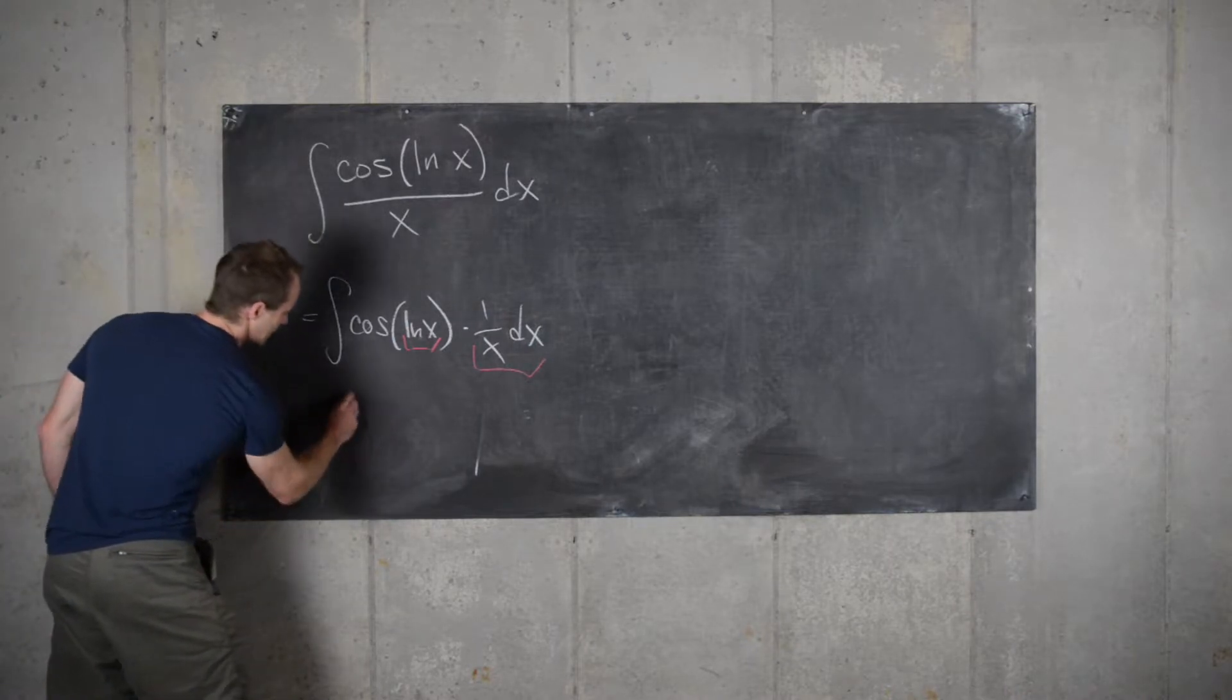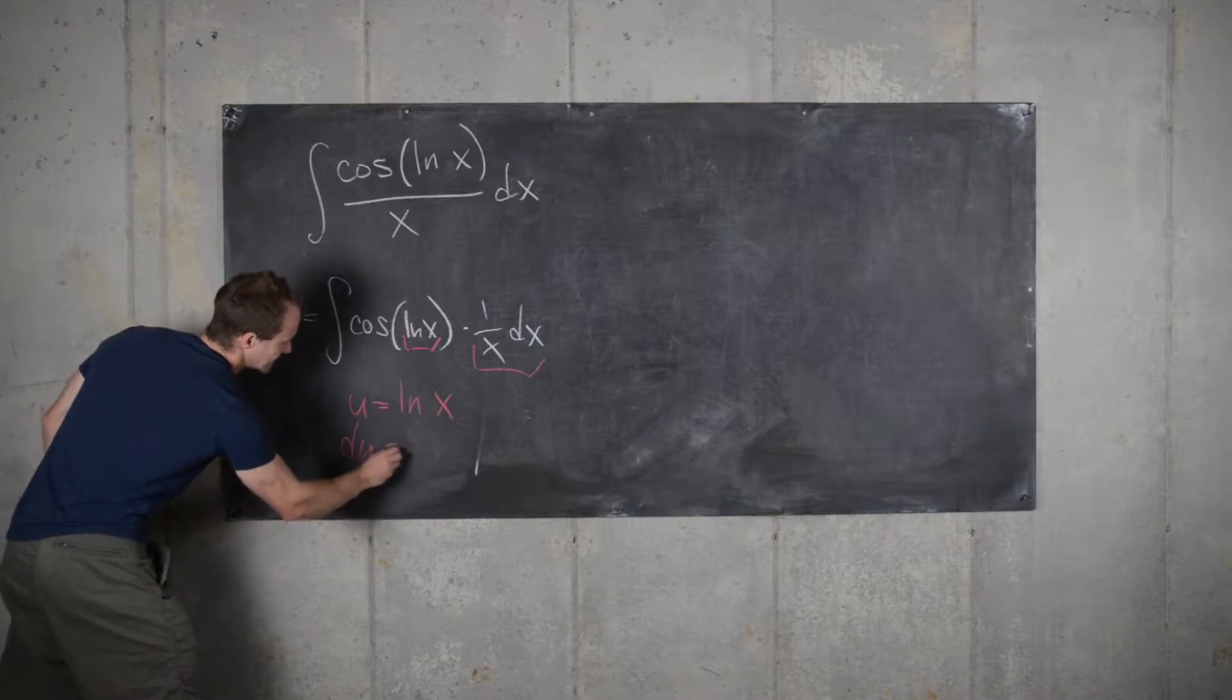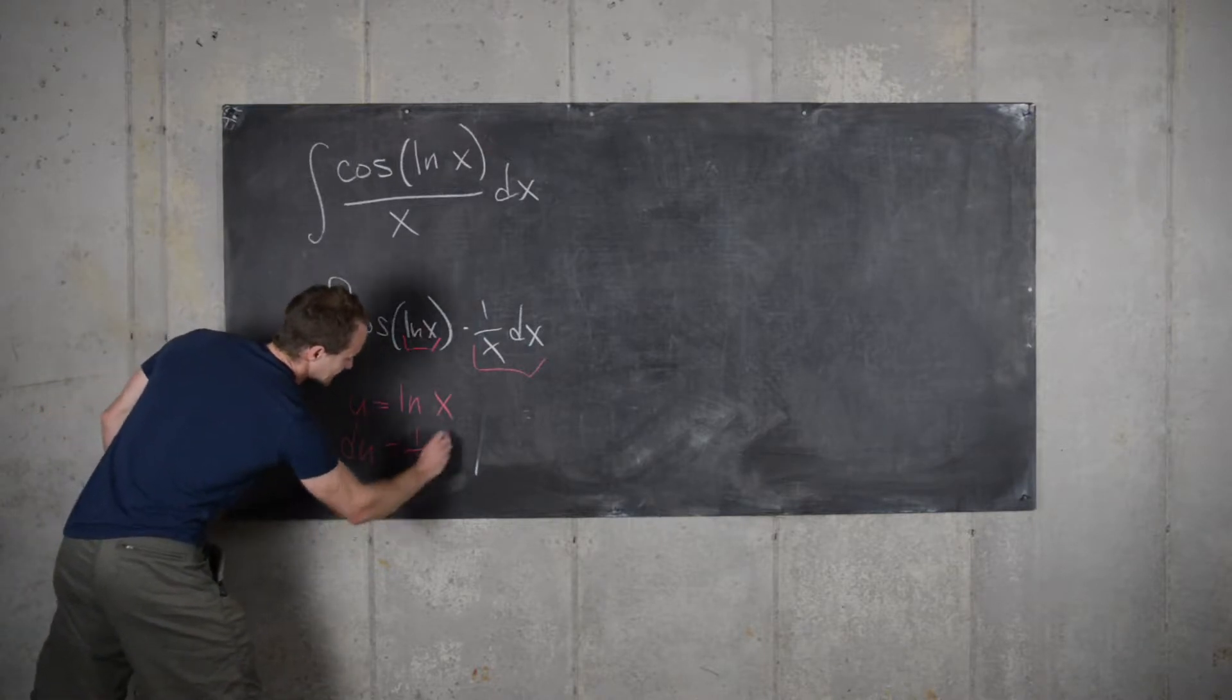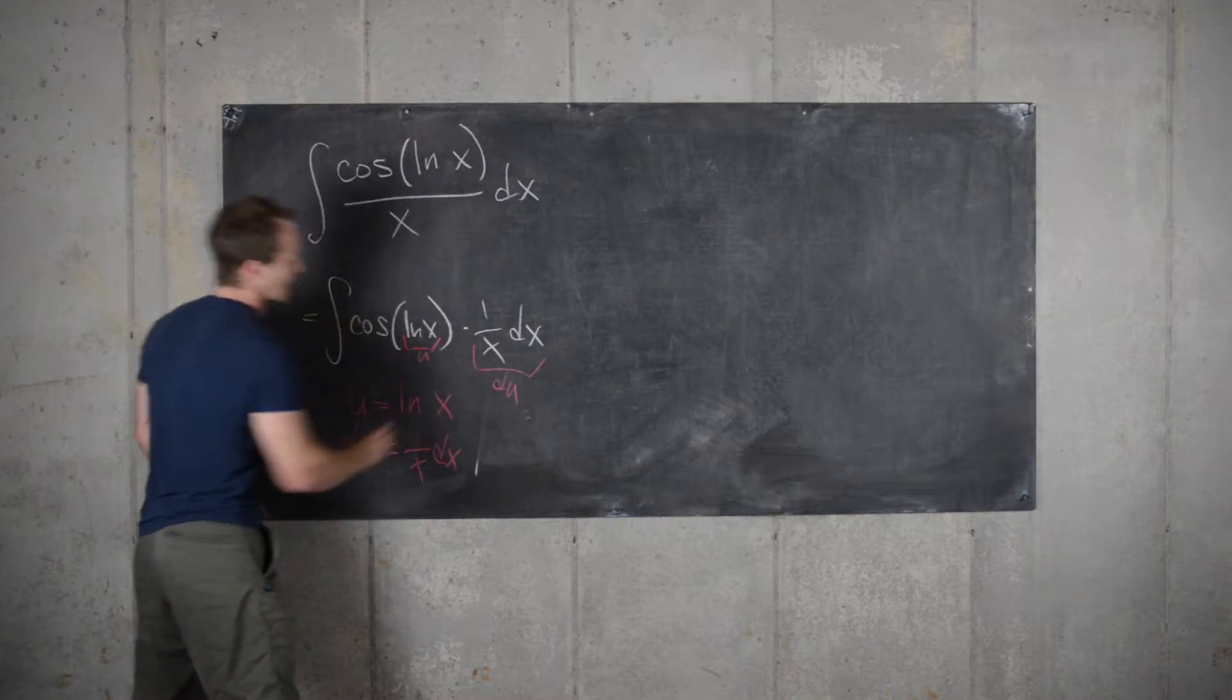So that sets up an obvious u substitution: u equals the natural log of x, and du equals 1 over x dx. So there's our u, and there's our du.